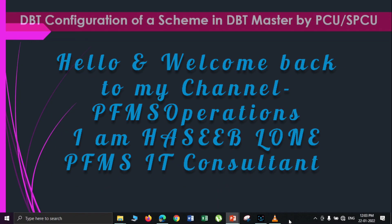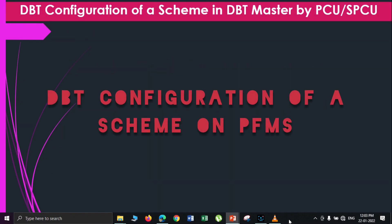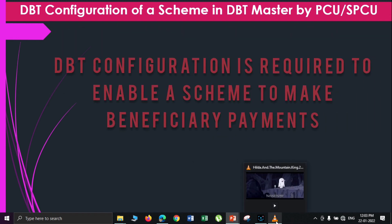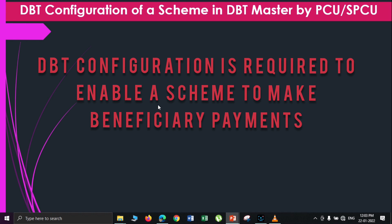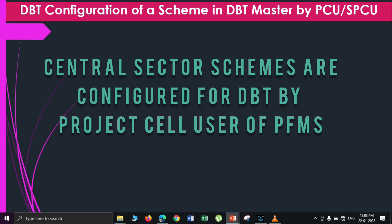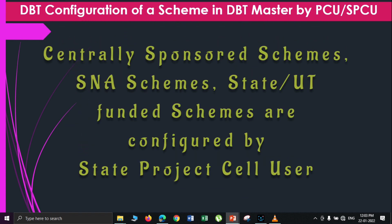In order to make the beneficiary payments, your scheme needs to be configured for the DBT module first. DBT configuration is done either by the project cell user or the state project cell user, depending upon the type of scheme you are implementing. For central sector schemes, configuration is already done by the project cell user, but for sponsored schemes, state schemes, UT schemes, or linked schemes, you have to request DBT configuration from the state project cell user.